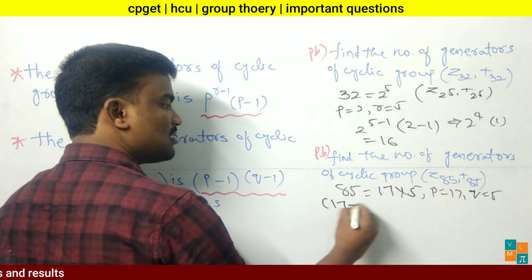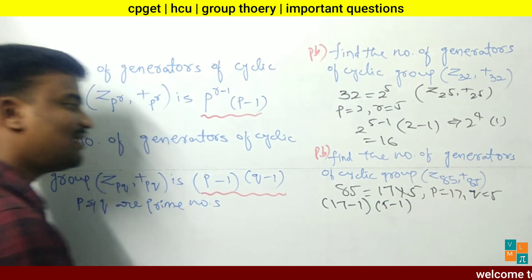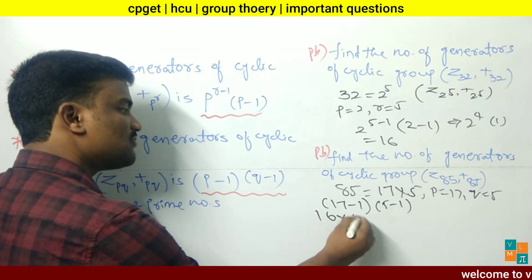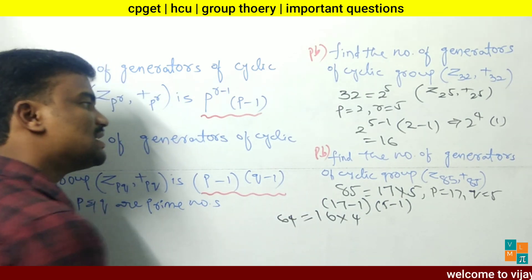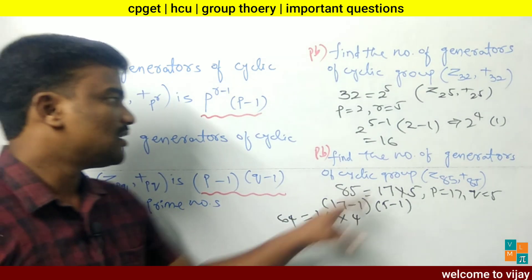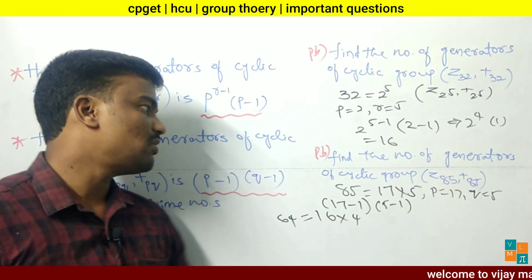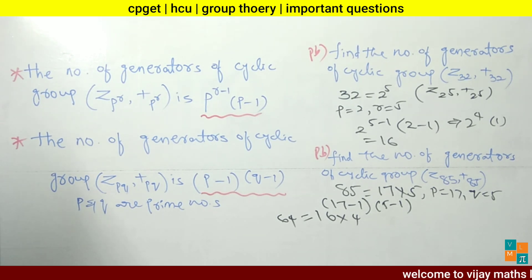Substituting the values: (17 minus 1) into (5 minus 1) = 16 into 4 = 64. The number of generators of cyclic group Z85 with addition modulo 85 is 64. Remember, these two are the most important results to find the number of generators of a cyclic group.